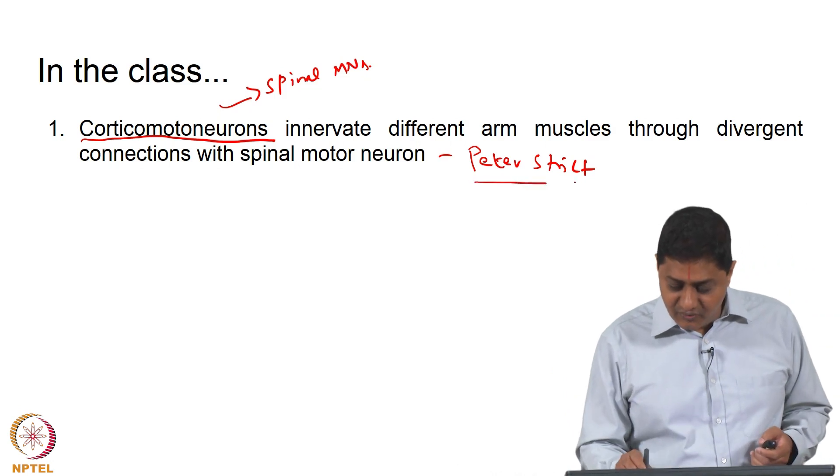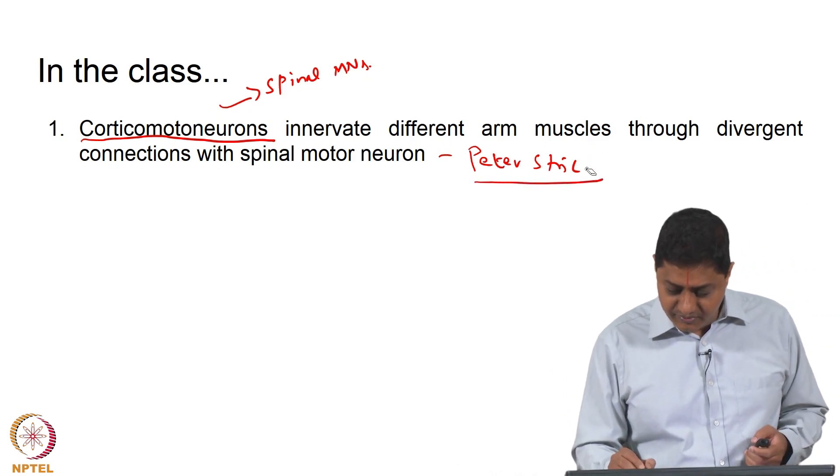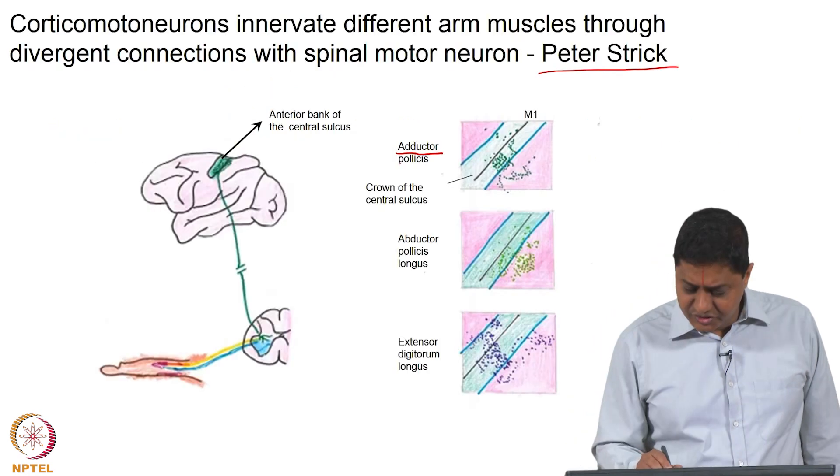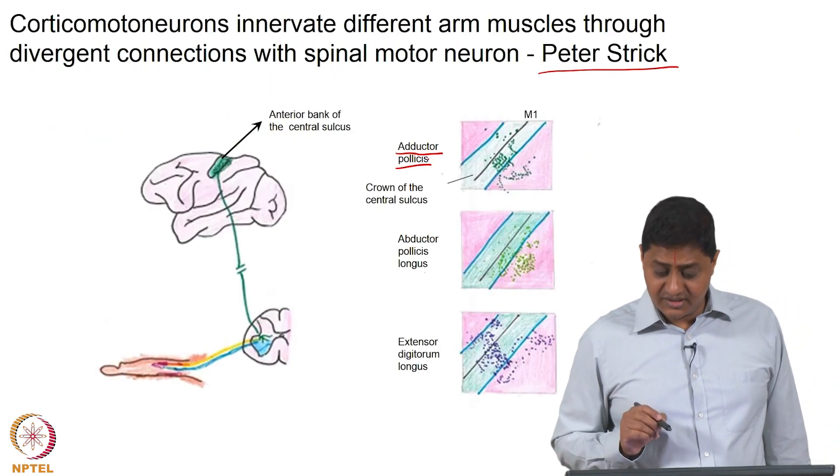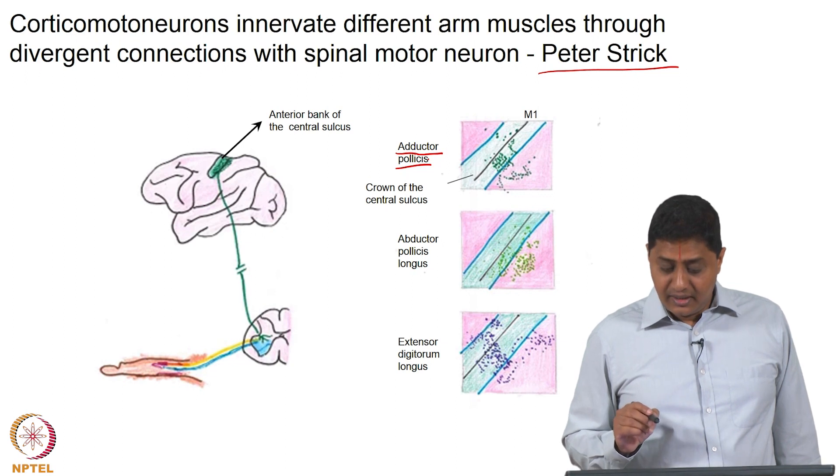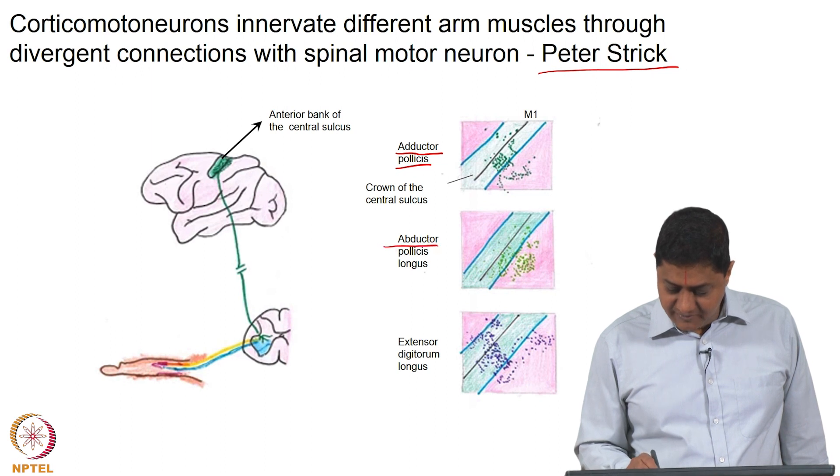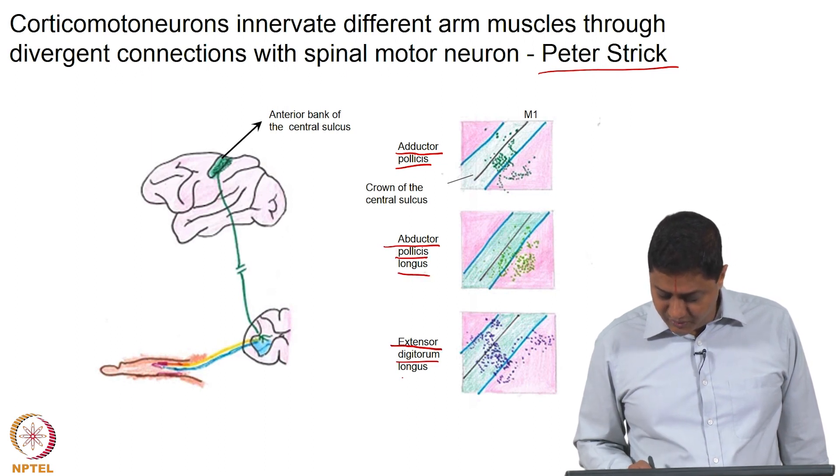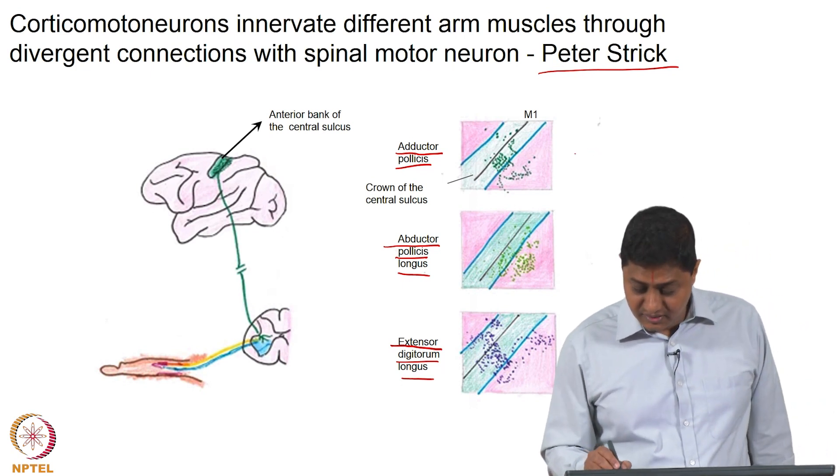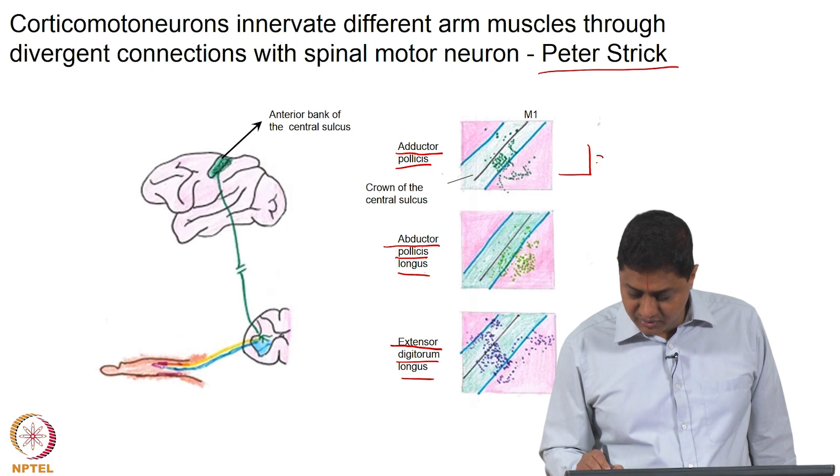Here we will discuss the work of Peter Strick. What is shown is the set of neurons that innervate the muscle adductor pollicis, abductor pollicis longus, and extensor digitorum longus.